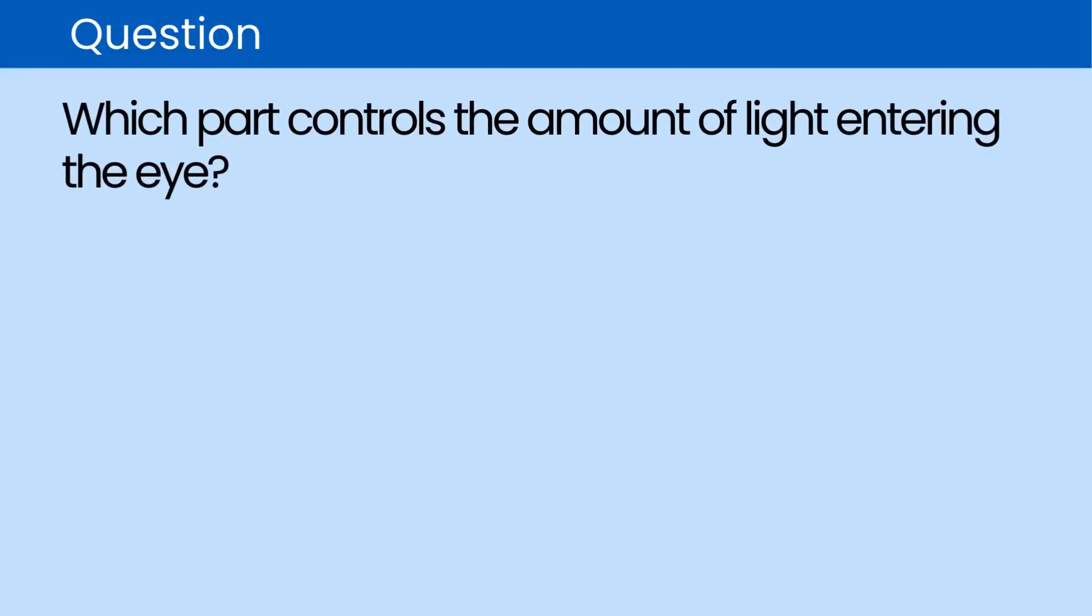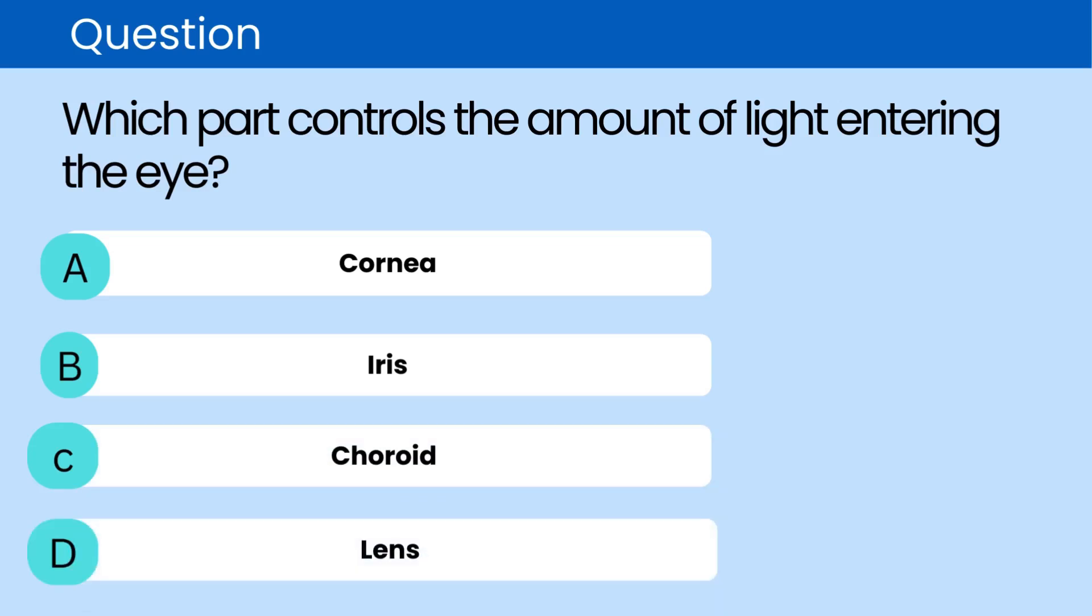Question. Which part controls the amount of light entering the eye? A. Cornea. B. Iris. C. Choroid. D. Lens.